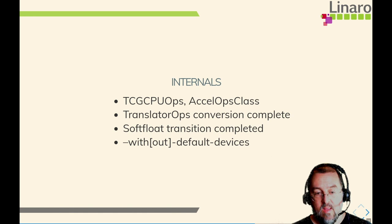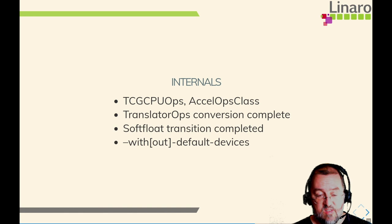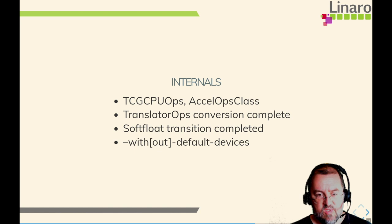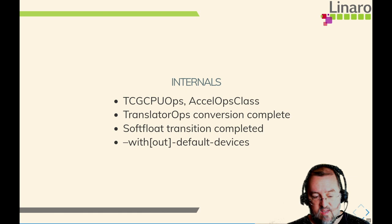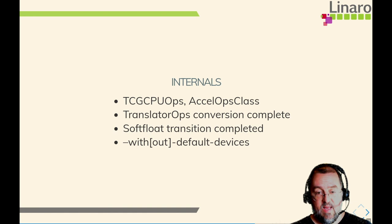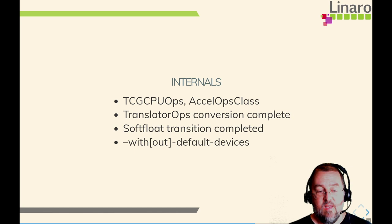Another area that has changed is the common translator loop, which is embedded in translator ops and is now completely converted — all guest architectures now use the common translator loop, making management of that code a lot simpler. The 80-bit and 128-bit soft floats are now all handled in the same core code, completing the transition started during the SSVE rewrite of the Berkeley soft float code. Finally, there is a with-and-without default devices build option, allowing you to specify which devices to include in your build — so for example, if you're building a KVM-only binary, you may not want to include devices that are only used for emulation.